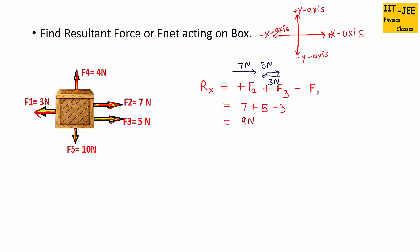Same way we can find the resultant of vertical forces. F4 is along positive y-axis, 4N up. And F5 is downward or towards negative y-axis, 10N.